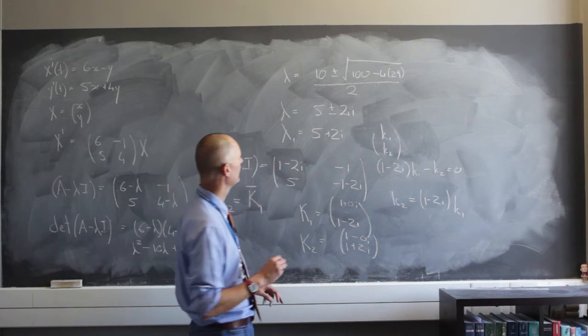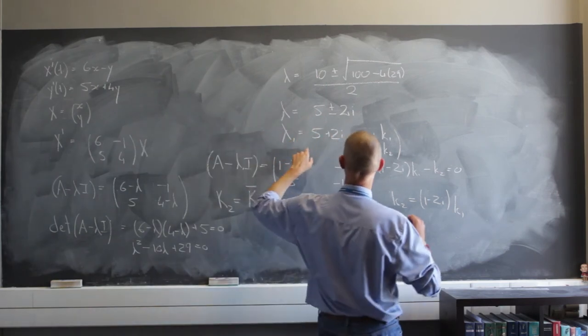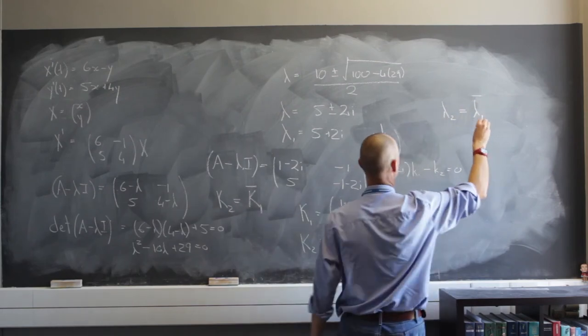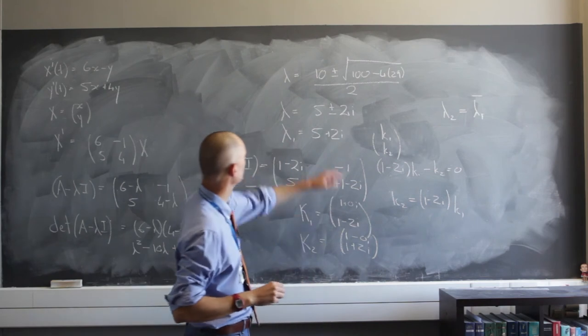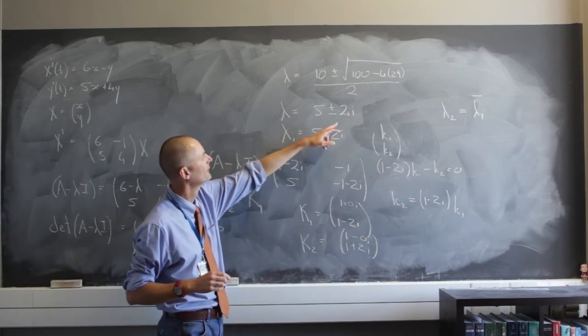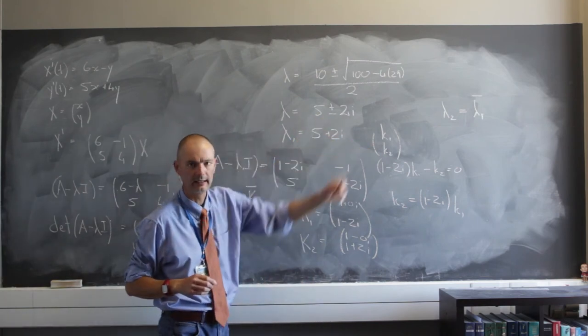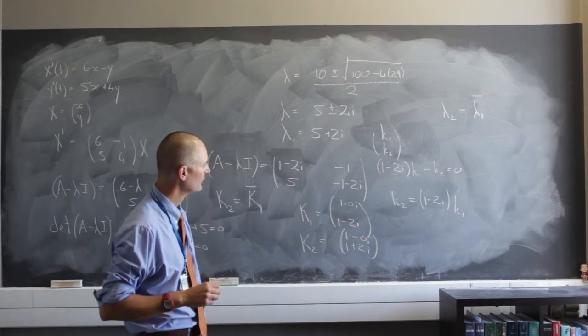So that positive becomes a negative, that negative 2 becomes a positive 2. So you're always going to have that. And you can see here as well with lambda, remember that lambda 2 is just going to be the complex conjugate of lambda 1. And as much as I had 5 plus 2i, then I'm going to have 5 negative 2i for lambda sub 2. So that's always going to work out.